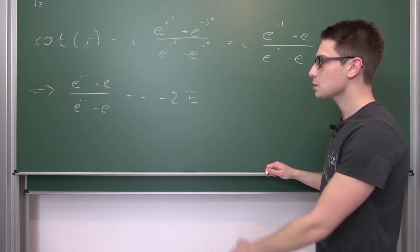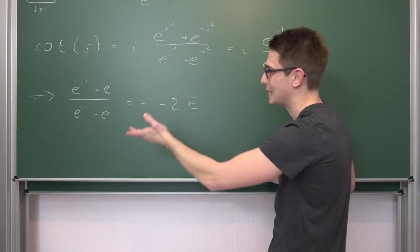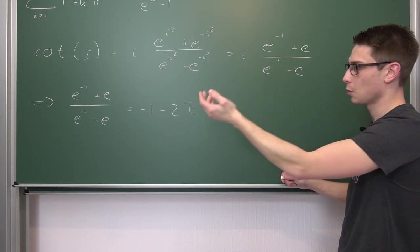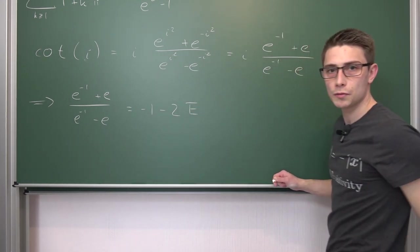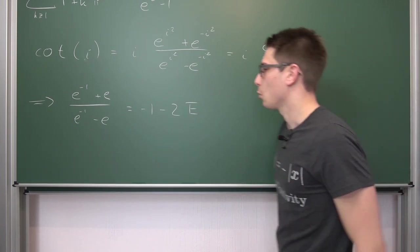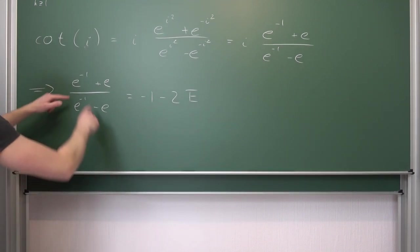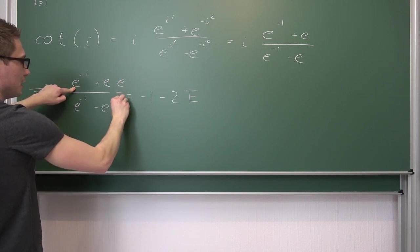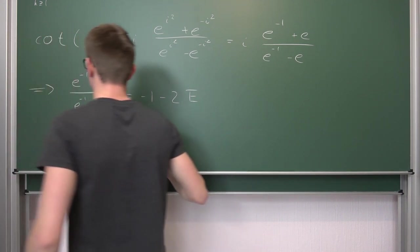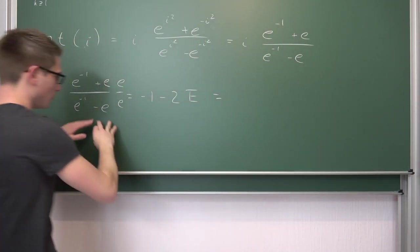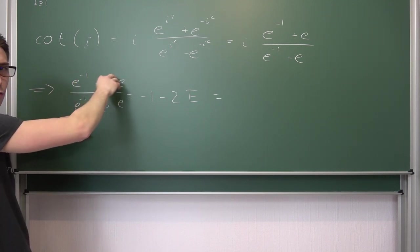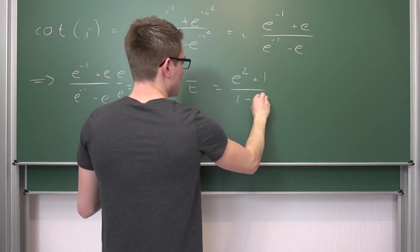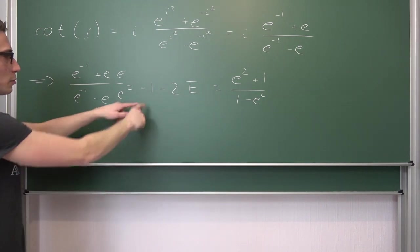So cotangent of i is just this and if we were to cancel out the i on both sides, we're going to get e to the negative one power plus e over e to the negative one power minus e being equal to negative 1 minus 2 times our series that we are striving for, 2 times S. Now all that's really left to do is to separate our S and then we are basically done. So let us add 1 on both sides and multiply both sides by negative 1 then divide both sides by 2. But first I would like to do one more little manipulation. Let us get rid of the 1 over e's that we have right here. So expanding this fraction by e over e, multiplying everything with e on the top and bottom. We are going to get e squared plus 1 over 1 minus e squared.